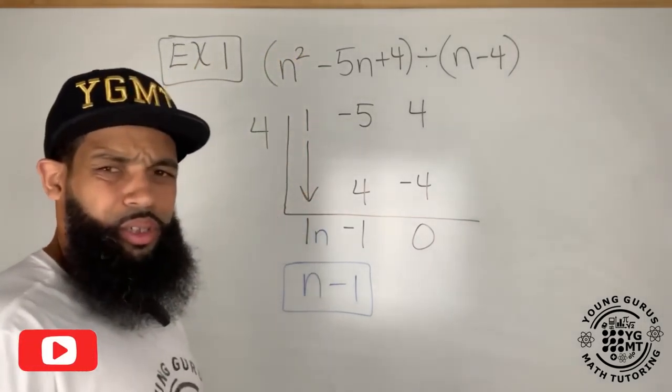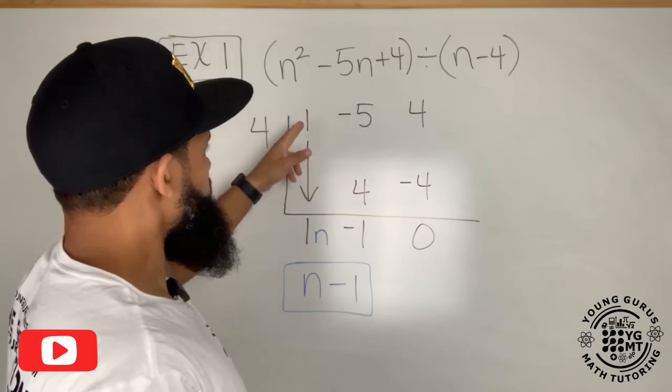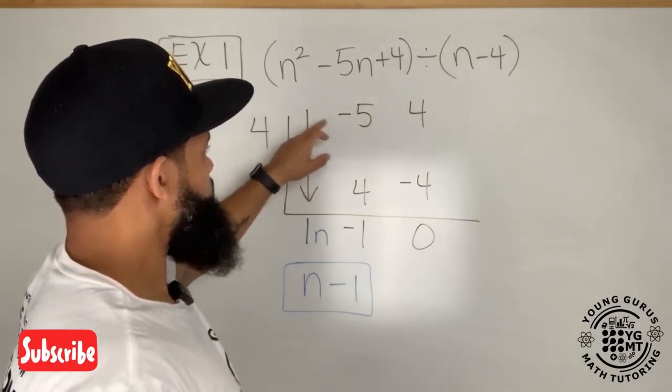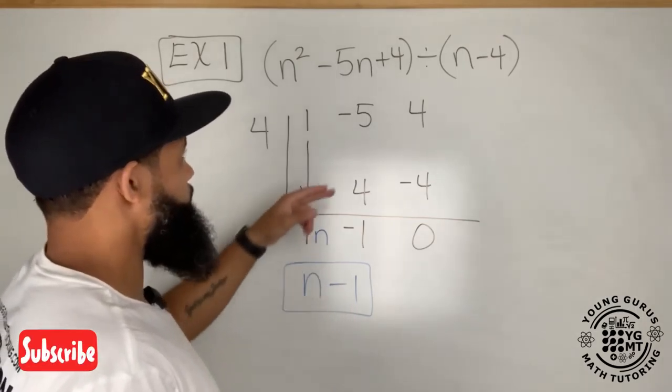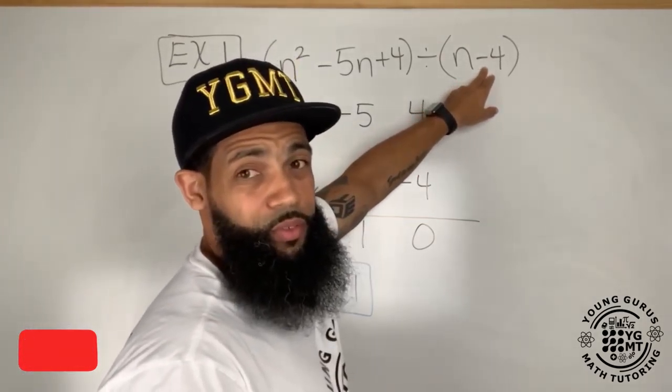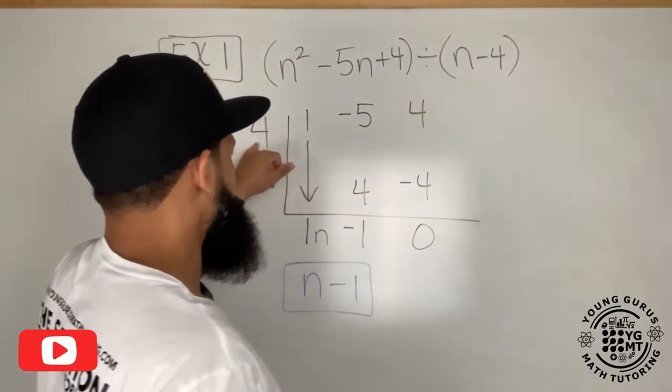Now in order to write out my quotient, I'm going to start with one exponent lower than the highest one that we started with. So this is going to become n one, and there's nothing with that, so my quotient actually is n minus one.